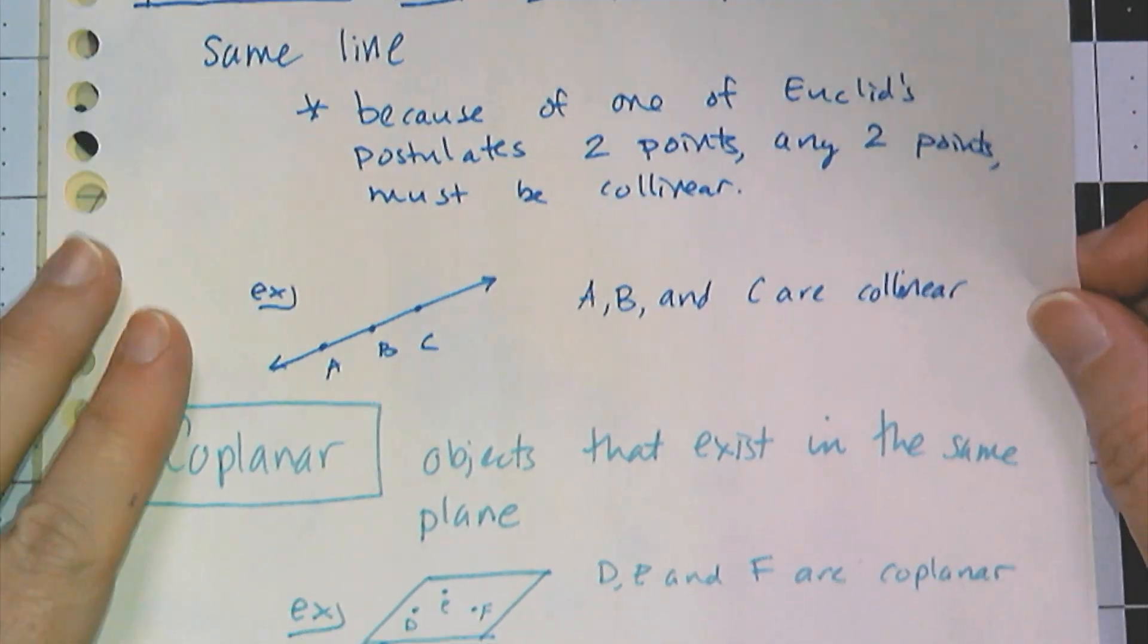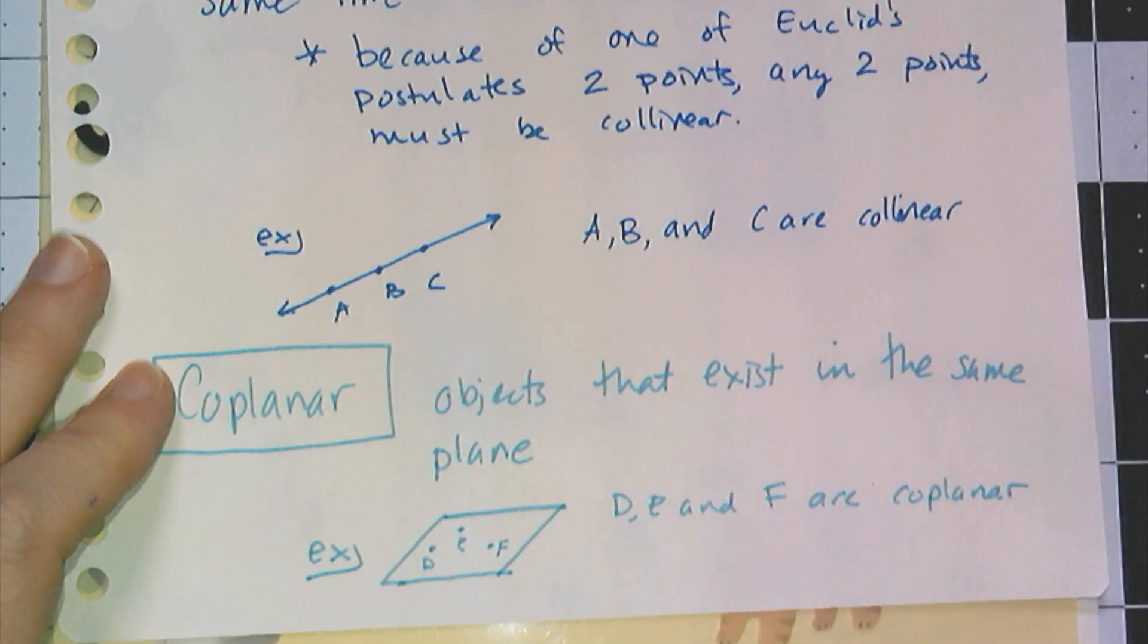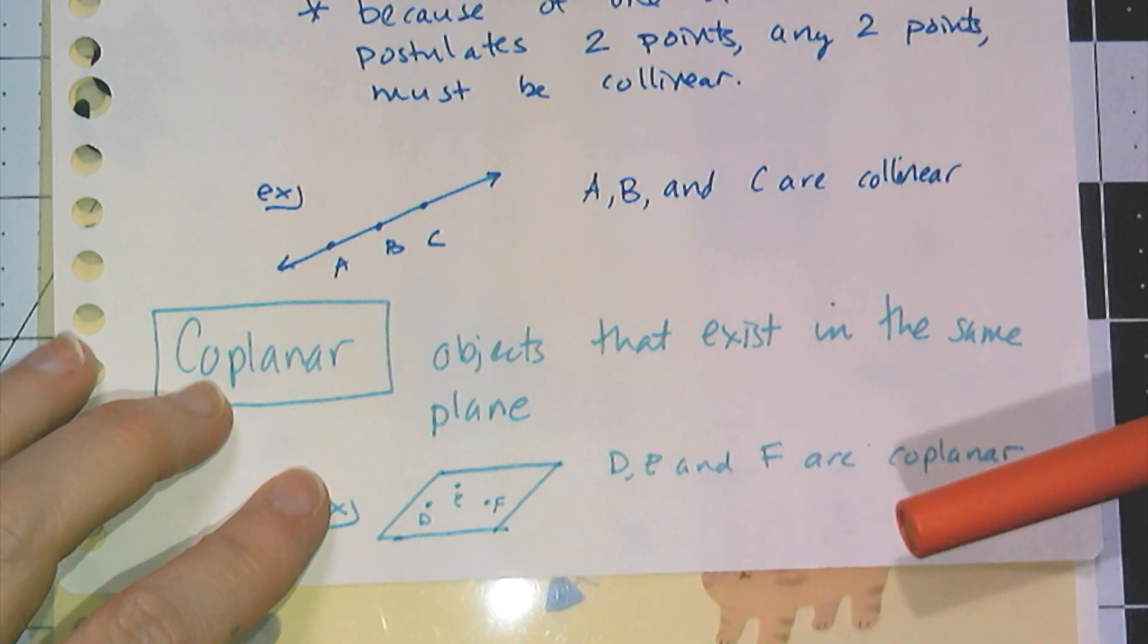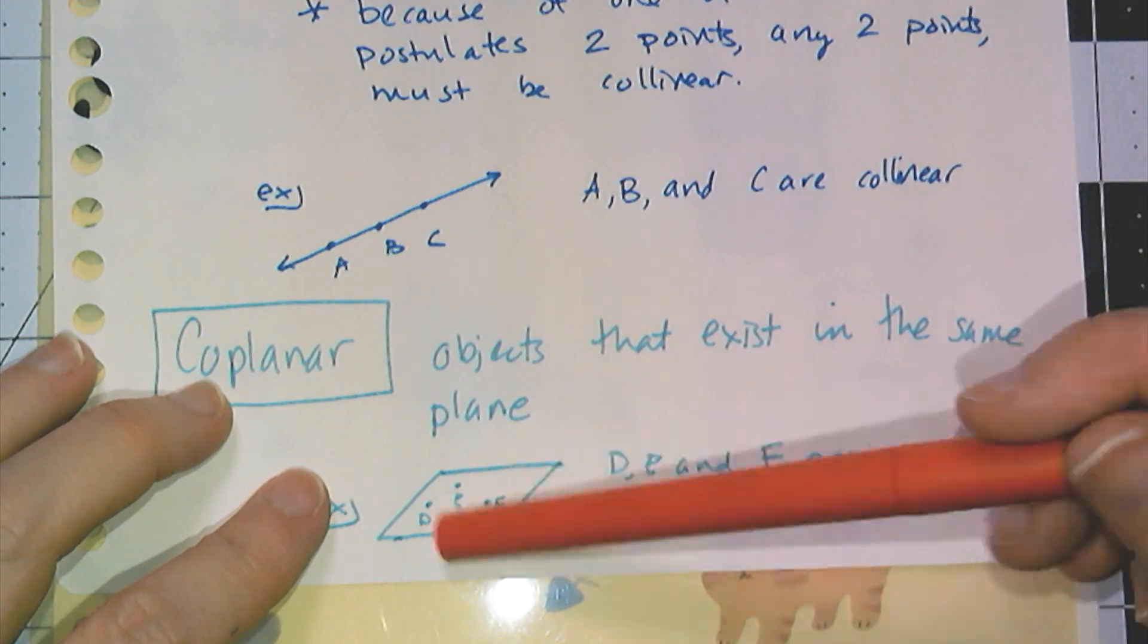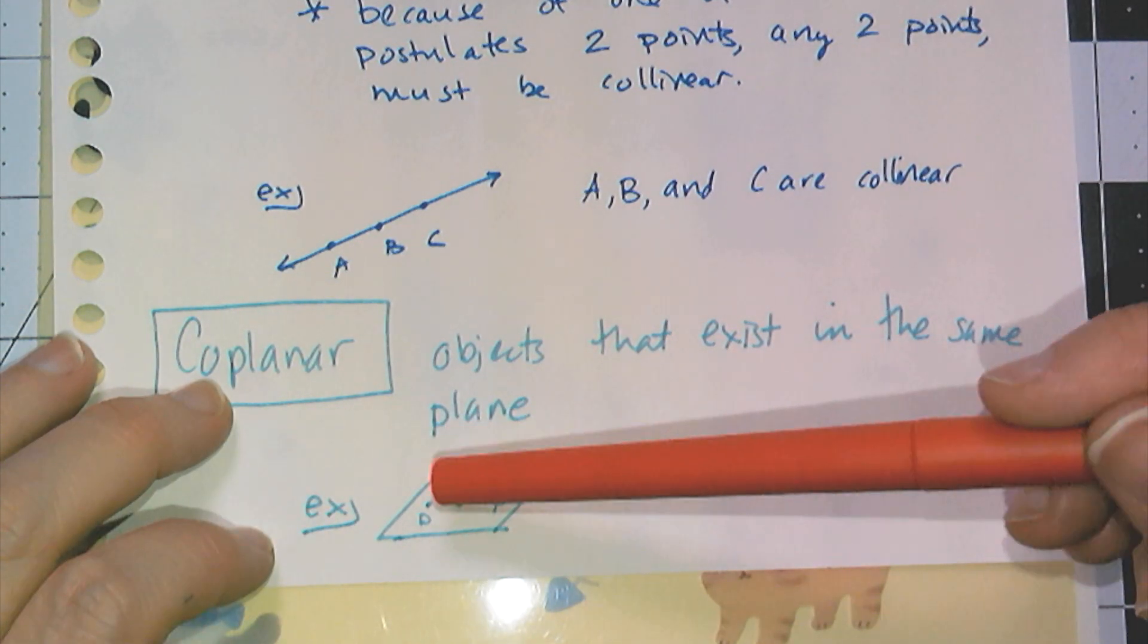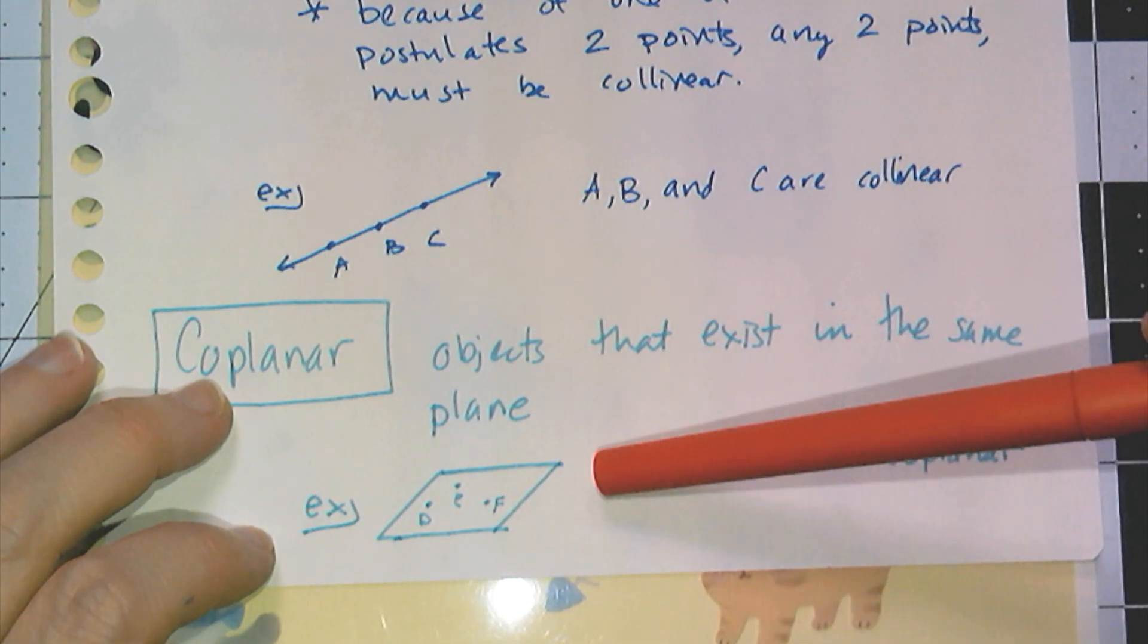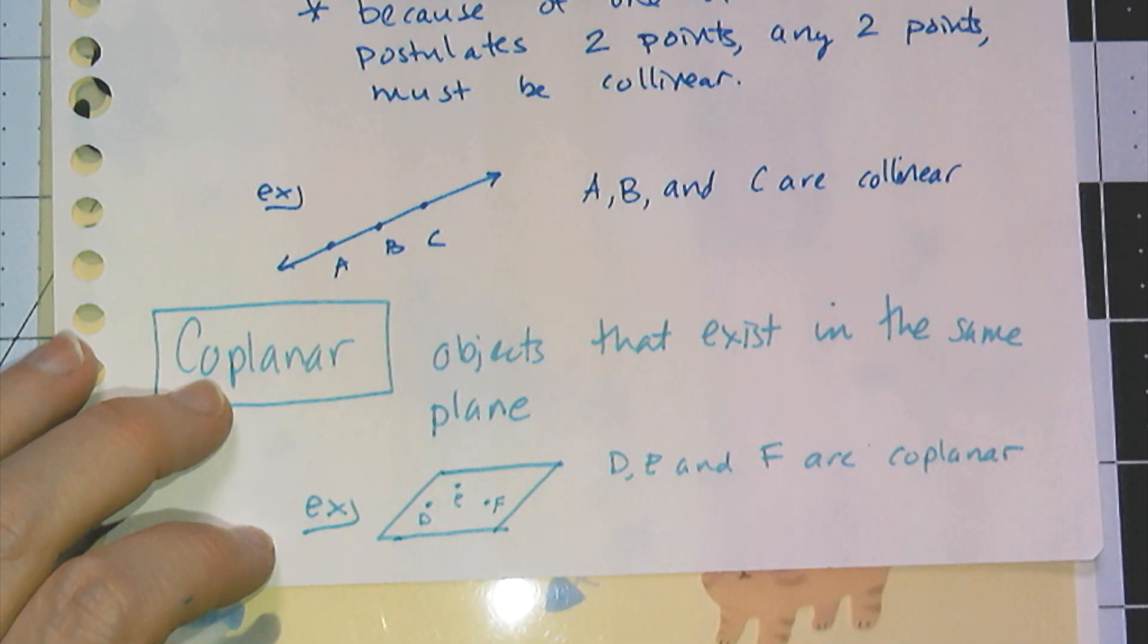Similarly, objects can be coplanar, which means they exist in the same plane. I drew my parallelogram to represent my plane and I drew the points D, E, and F. According to this drawing, D, E, and F are coplanar.